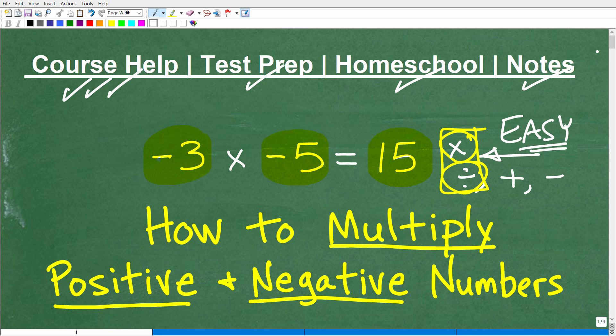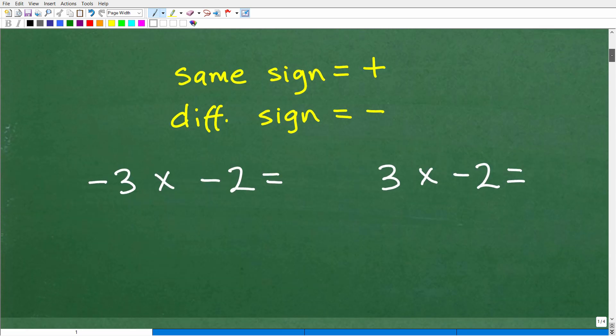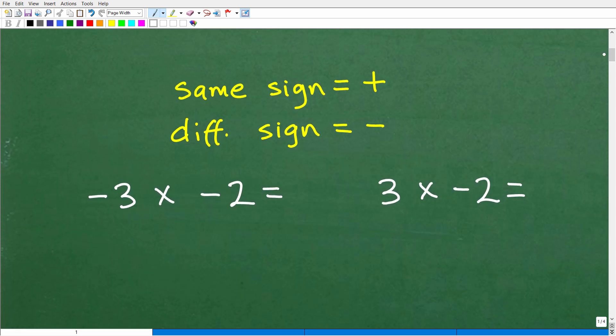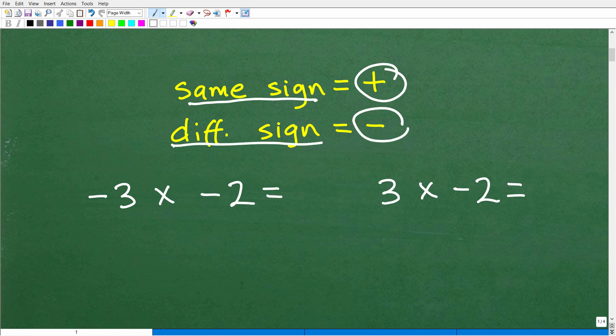So let's get to it and talk about how to multiply positive and negative numbers. Here is the rule. I told you it was going to be easy. Super easy. If the signs are the same, the answer is positive. And if the signs are different, the answer is negative. Again, easy. However, things that are easy are also easy to mess up. So let's go ahead and see how this rule works.